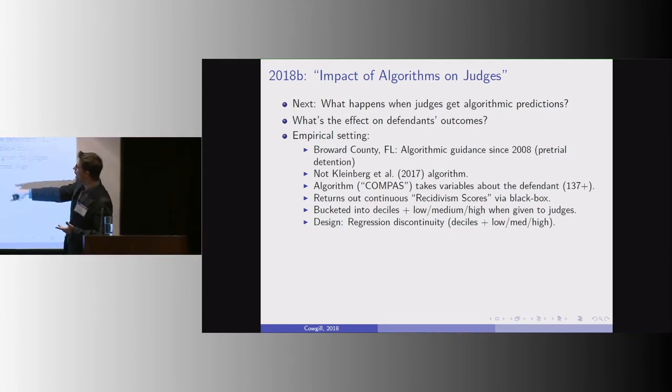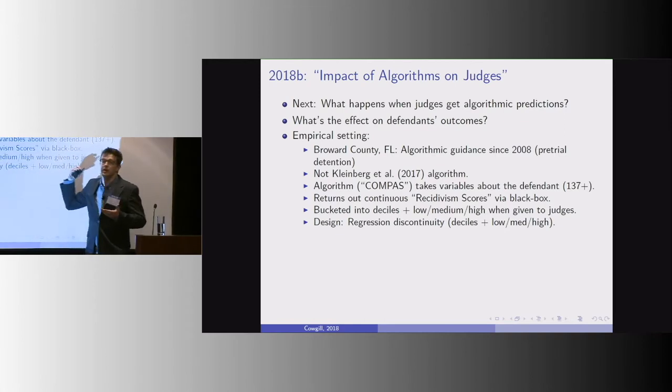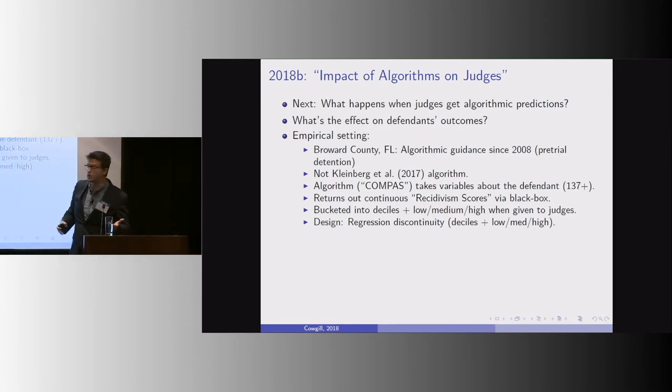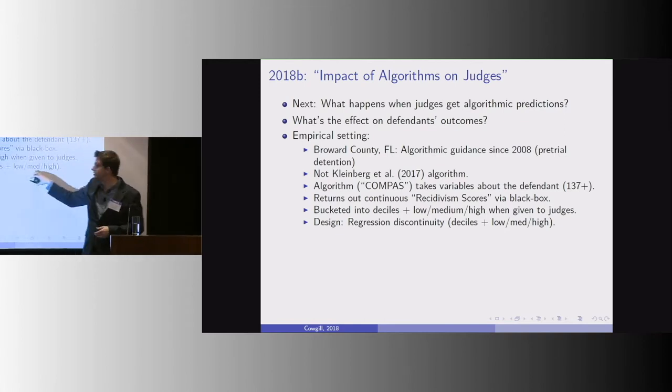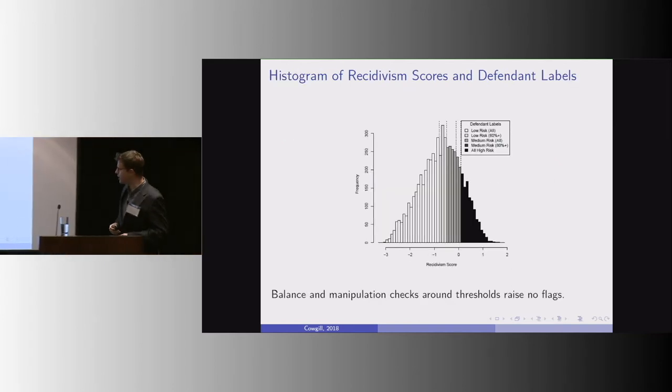So this is a regression discontinuity paper looking at what happens to how long you're detained pretrial around the decile thresholds and the low, medium, high thresholds.